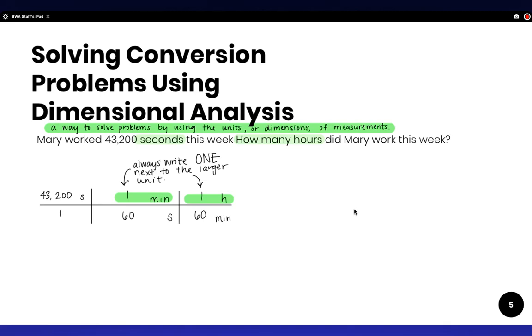So seconds is on the top and the bottom, so it does cancel. Minutes is on the top and the bottom. It will cancel. And you're left with hours as your final unit, which is what we want.